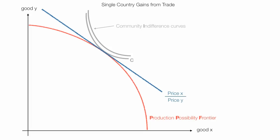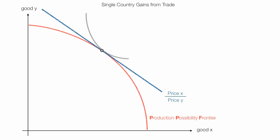The indifference curves are typically labeled as CI — so I have CI1, CI2, CI3, and so on. In the beginning, a country will produce and consume at that point right there. Domestic production and domestic consumption are both represented by that single point.